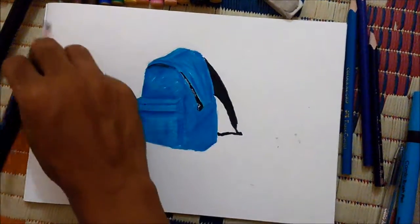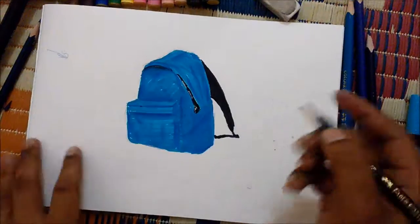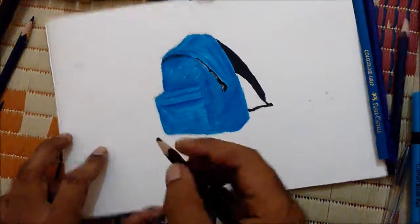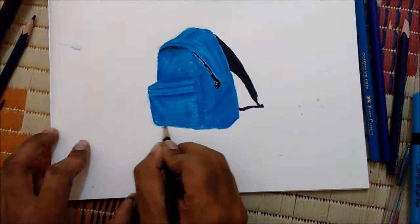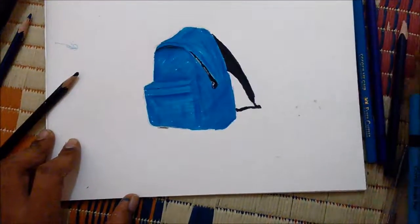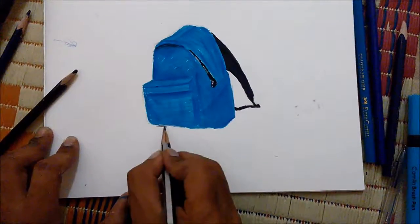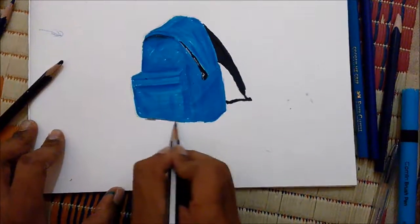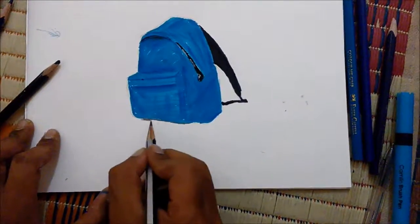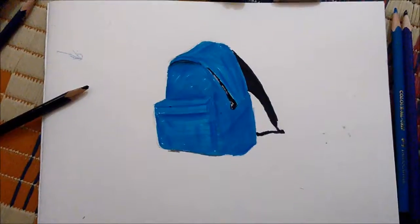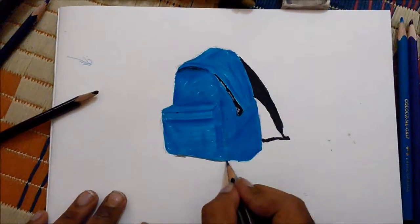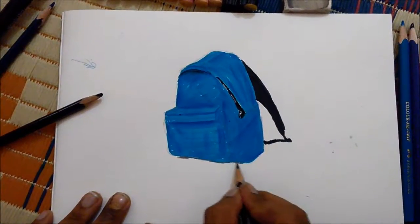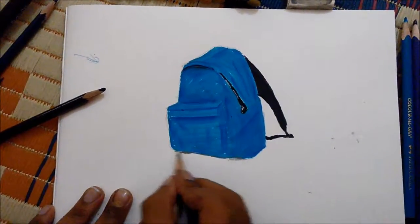Then let's move to the shadow. For the shadow, you have to start from here, this side. Let's start with pencil. It will be very easy to blend our colors. Blend the colors.